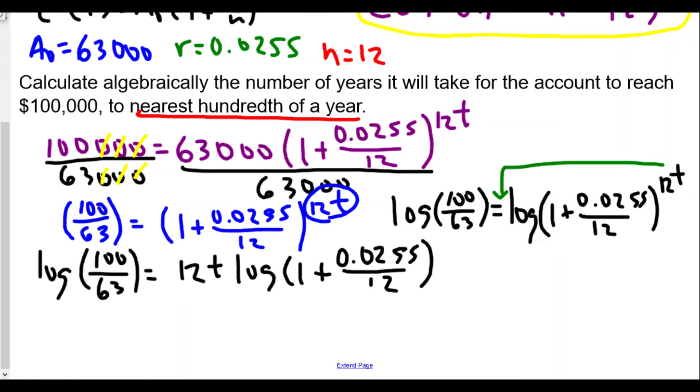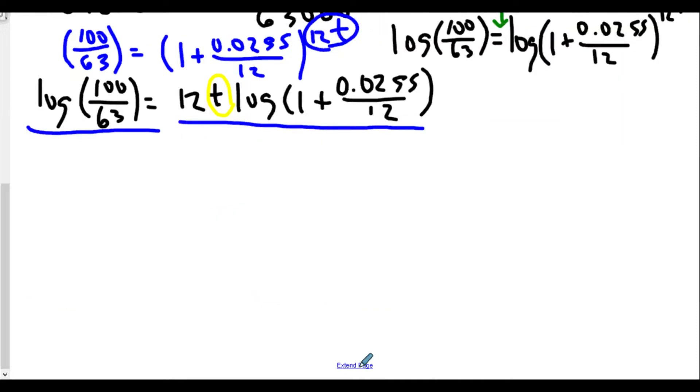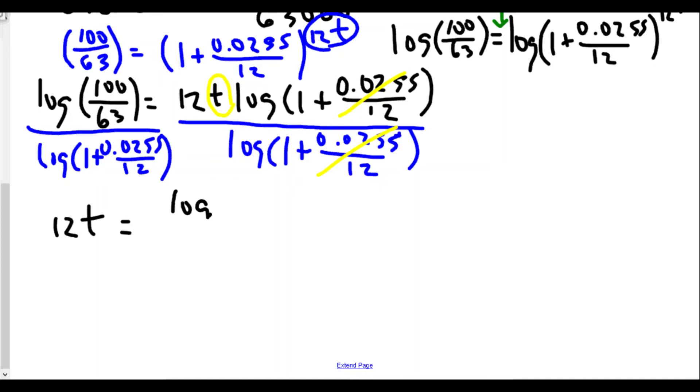Now we have the log of 100 over 63 equals 12t times the log of one plus 0.0255 over 12. We need to get t by itself. First I'm going to divide both sides by that log situation. We're left with 12t equals log of 100 over 63 divided by the log of one plus 0.0255 over 12.